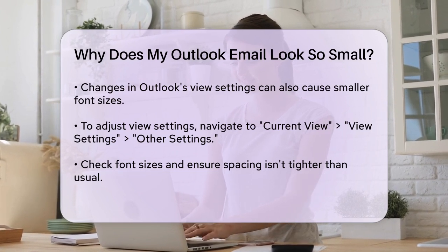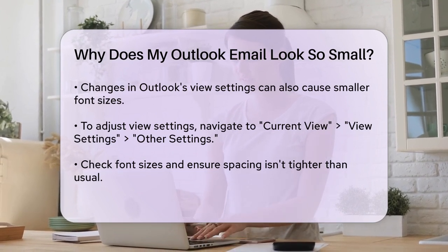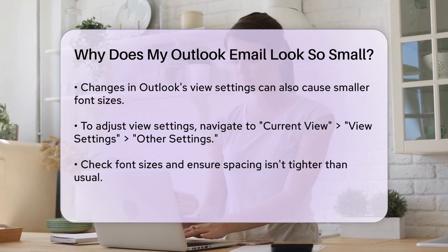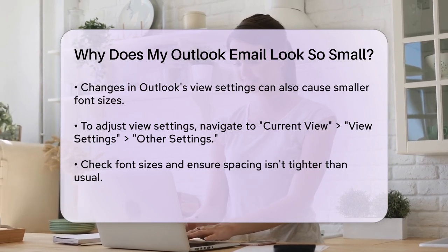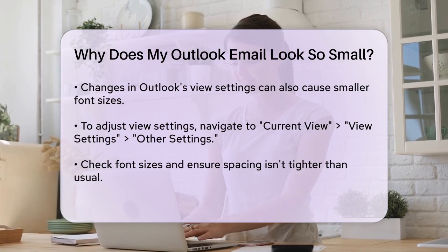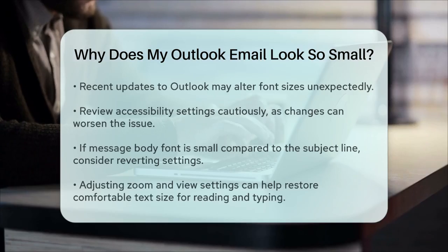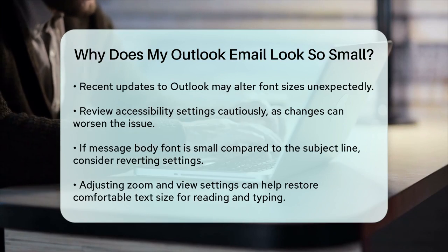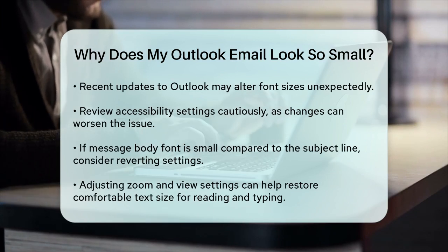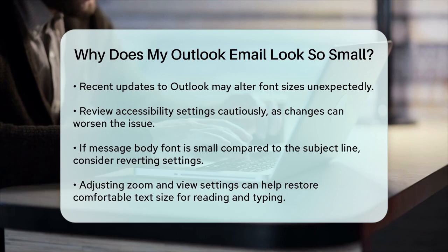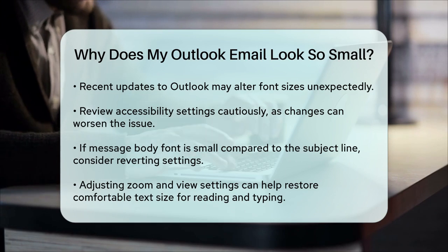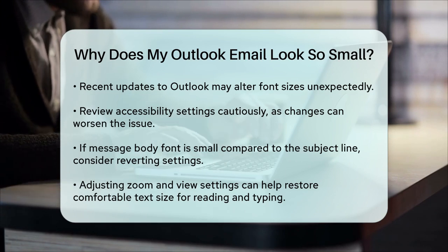Ensure that the spacing is not tighter than usual, as this can also make the text appear smaller. If you've recently updated Outlook, it's possible that the new version has altered the font sizes. In such cases, checking the accessibility settings might help, although be cautious, as changing these settings can sometimes make the issue worse. For example, if the message body font is tiny while the subject line font is huge, you might need to revert to previous settings or seek specific solutions for the new version.